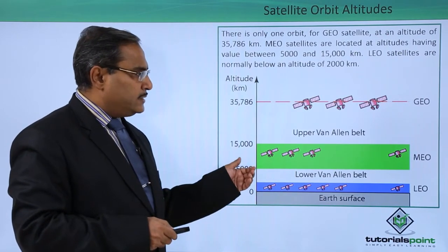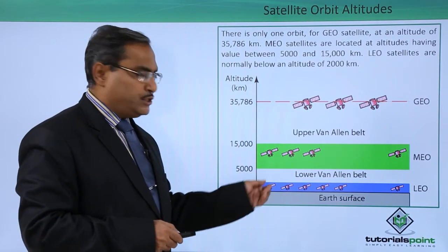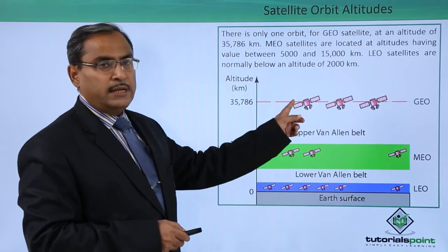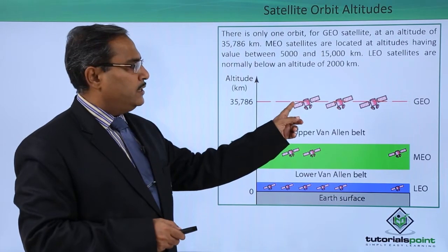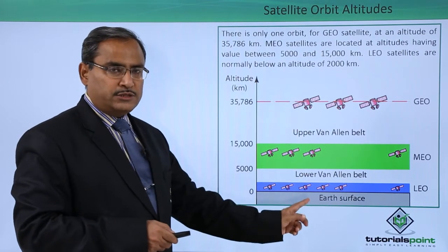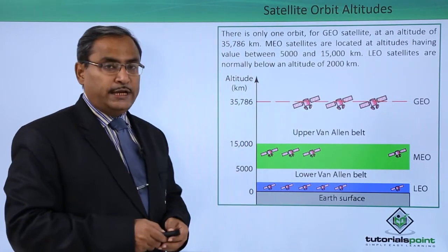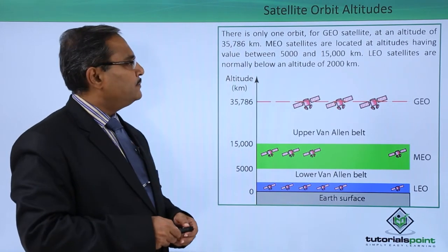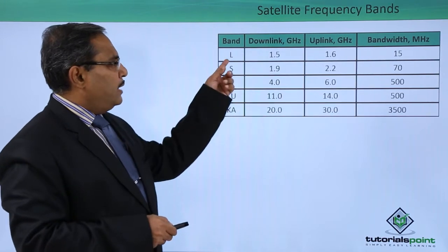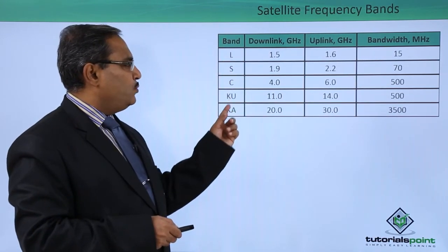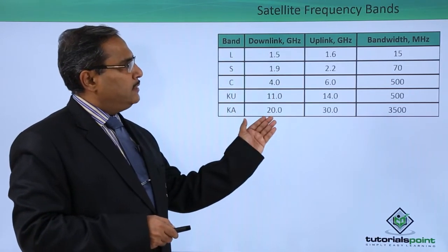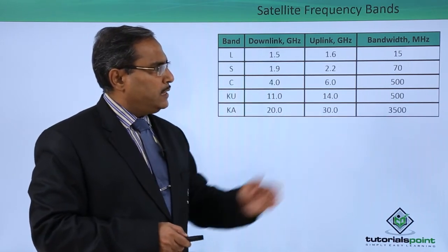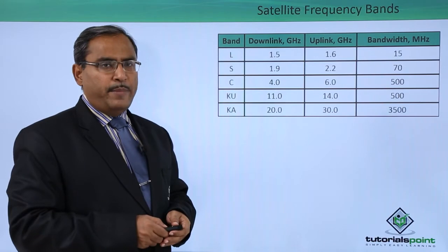Whenever the satellites are communicating with the earth stations, there will be one uplink frequency from the earth station to the satellite and a downlink frequency from the satellite to the earth station. They will be using different bands for their communication. Here we have L, S, C, K, U, and Ka bands, with downlink and uplink frequencies in gigahertz and the respective bandwidth in megahertz.